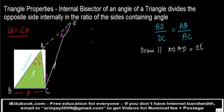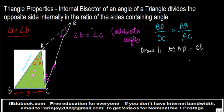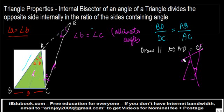Now, what we learn from here is that this particular line AD is parallel to CE. So angle b should be equal to angle c — this angle should equal this angle. Why? Because these are alternate angles. We have two parallel lines, and this is a transversal cutting them, so the alternate angles are equal.